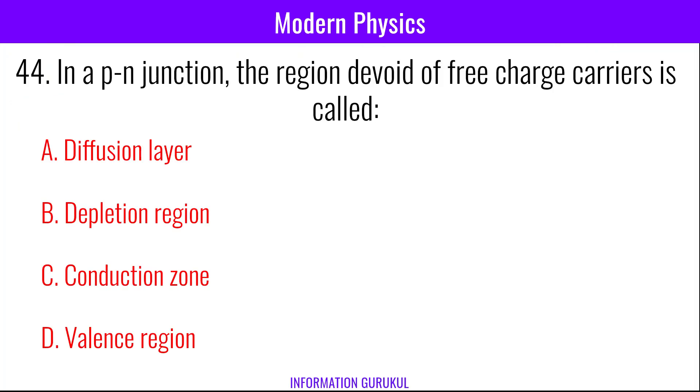In a P-N junction, the region devoid of free charge carriers is called depletion region.